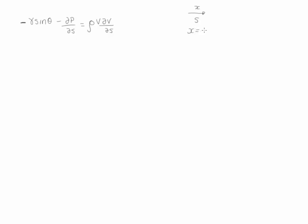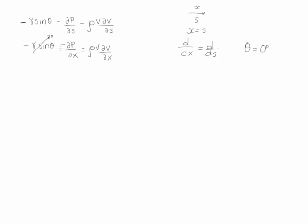The x direction goes in exactly the same direction as the streamline. Therefore, x and s are equivalent to each other, and any derivative with respect to x is the same as any derivative with respect to the streamline direction. We can rewrite this equation as: minus gamma sine(theta) minus dP/dx equals rho V dV/dx. Because this is a horizontal streamline, theta equals zero degrees, so we can remove the sine theta term.